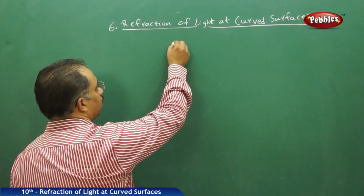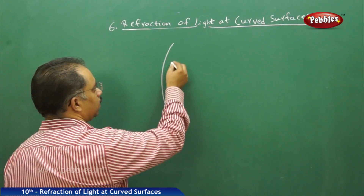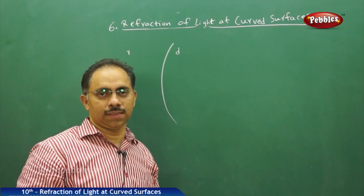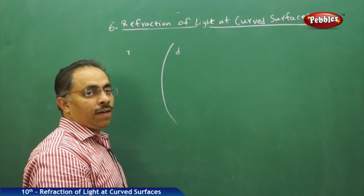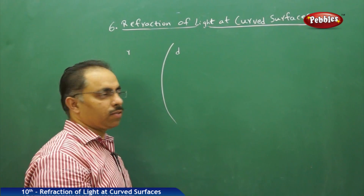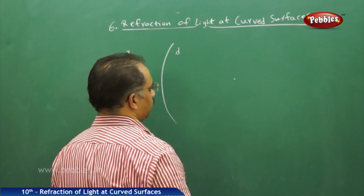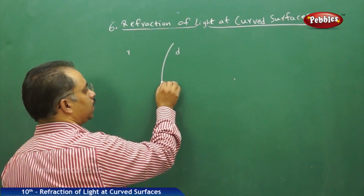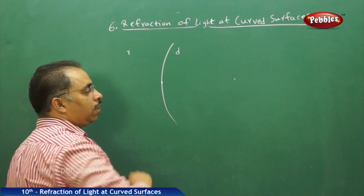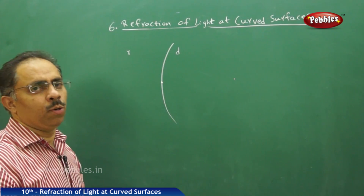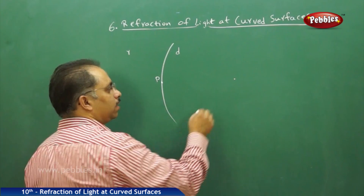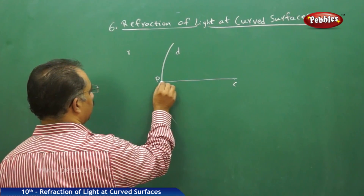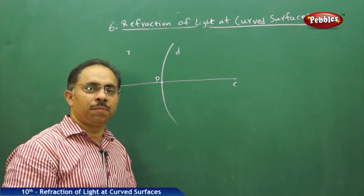Let us consider one particular curved surface like this. Let us assume that this is the denser medium and here it is the rarer medium. This curved part will have a centre of curvature. Let us assume the centre of curvature is here, and this is the geometric centre of the curved surface — we call it the pole P. Joining the pole P and the centre of curvature C and extending this line gives us the principal axis.